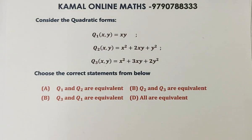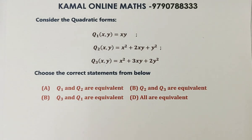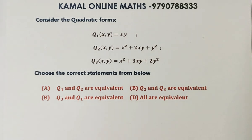Welcome to Kamala Online Max. Consider the quadratic forms: q1 = xy, q2 = x² + 2xy + y², q3 = x² + 3xy + 2y². Three quadratic forms are given. The question asks to choose the correct statements from the below options.